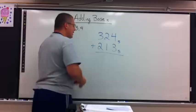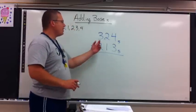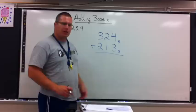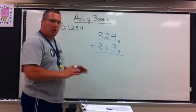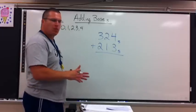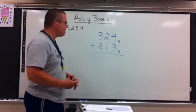Alright, so let's take a look at adding base 5. 324 base 5, plus 213 base 5. It's going to be normal adding with the same basic rules applying as they did in base 10.